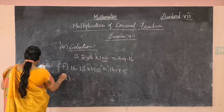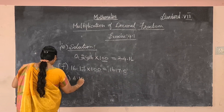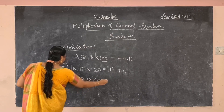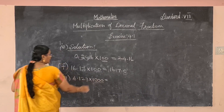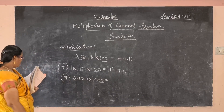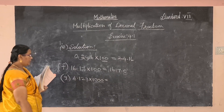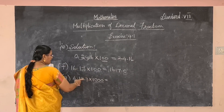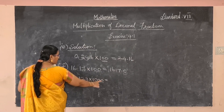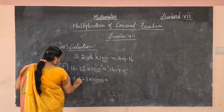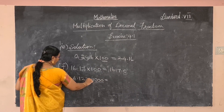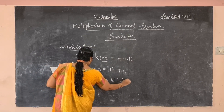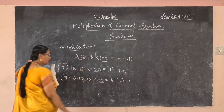Problem G: 6.123 into 1000. How many zeros? Three zeros. The decimal point shifts to the right side by three decimal places: one, two, three. The answer is 6123.0.